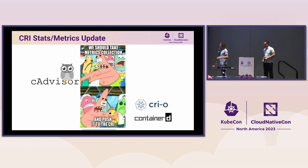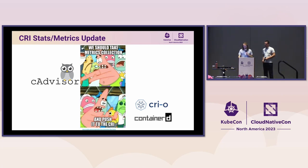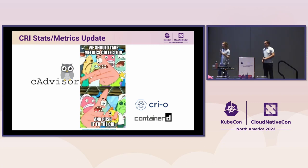Pretty much every CRI-O update talk over the past couple of years has mentioned a CRI stats update — and pretty much every talk, we have not actually talked about CRI stats. The general idea is that in SIG Node, we have an initiative to move stats collection from CAdvisor to the CRI implementation. CAdvisor's inclusion in the Kubernetes ecosystem is almost like a phantom limb from the time of Docker, since there wasn't an entity to do metrics collection regularly with Docker.